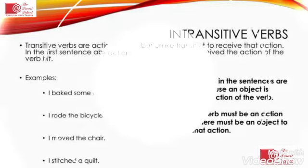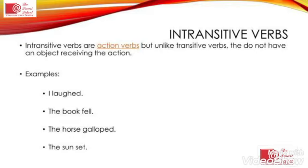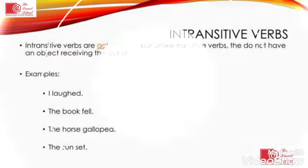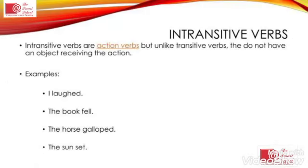An intransitive verb is also an action verb, but these verbs don't contain an object to receive an action, unlike transitive verbs. Examples: I laughed, the book fell, the horse galloped, and the sun set. These are examples that don't contain any object — only the subject and verb are present, and the verb is called an intransitive verb.